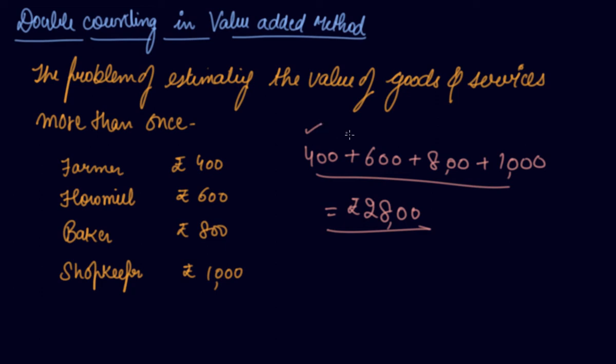Your farmer gives wheat to the floorman. In this you have value of wheat that is 400 plus the processing, the value addition you did. Then in this, there is a value of 600 included: 400 of wheat, 200 of flour, plus 200 was your value addition.